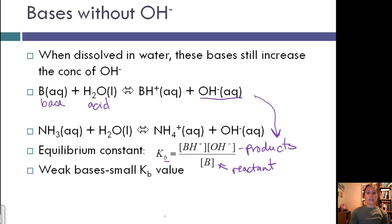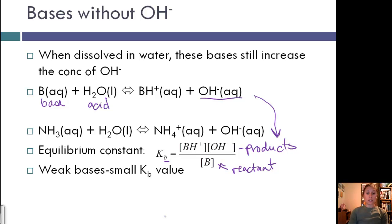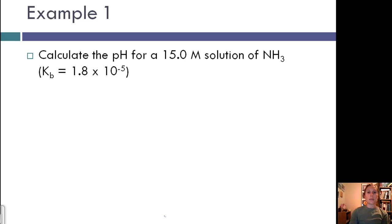Weak bases have a small Kb value, and strong bases would have a large Kb value just like the acids. Let's look at an example. Let's calculate the pH for a 15 molar solution of NH3, where the Kb is 1.8 times 10 to the negative fifth.